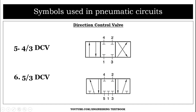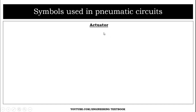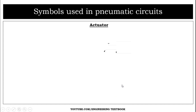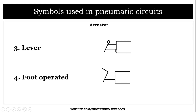Our next category is actuators, which are used to operate the DCVs. The first actuator type is manual. The second is push button operated. The third is lever operated, and the fourth is foot operated. Both lever and foot operated are categories of manual actuators.